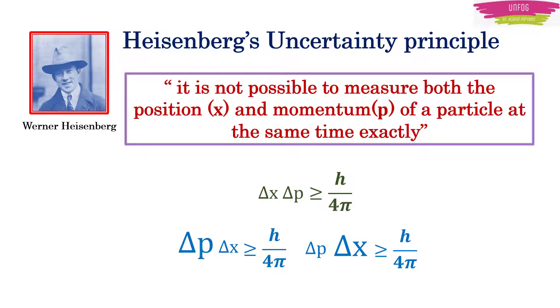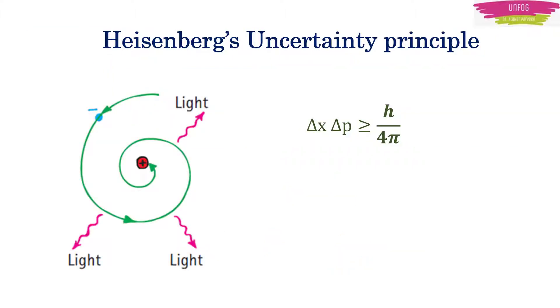But what does this uncertainty principle has to do with the electron here? Let's apply this principle here and see what happens.